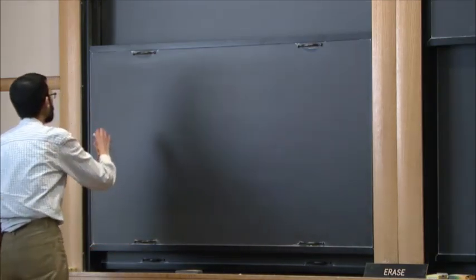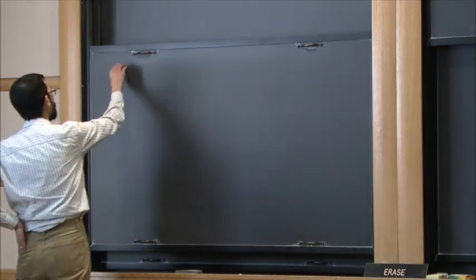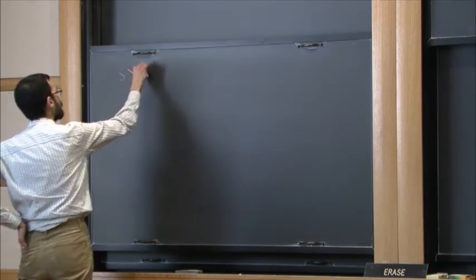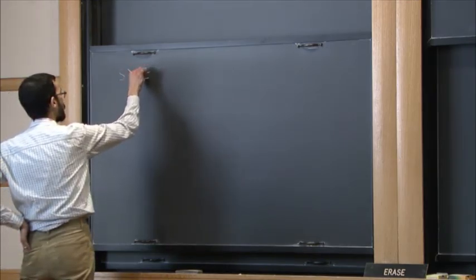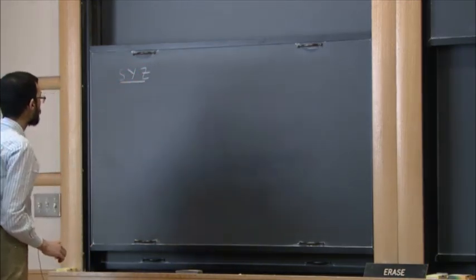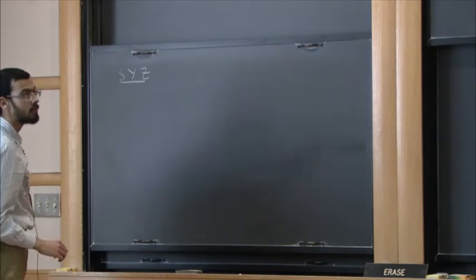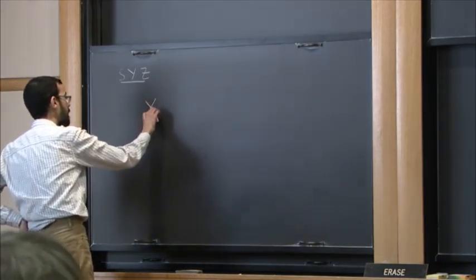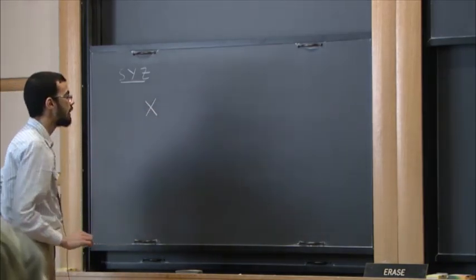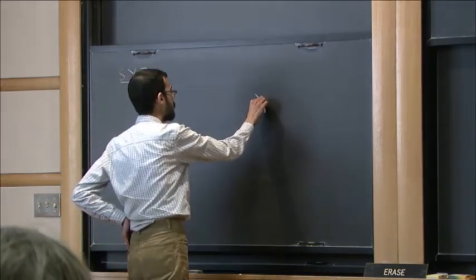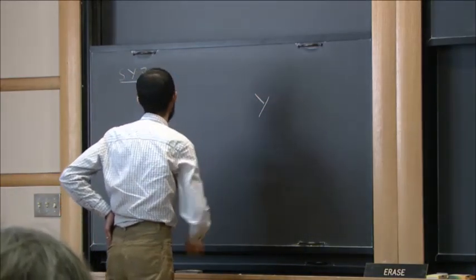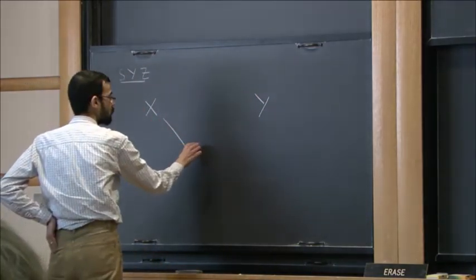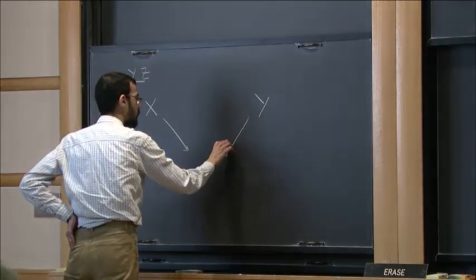There are two serious proposals for trying to understand mirror symmetry. One of them is Strominger-Yau-Zaslow (SYZ). They suggest that if you have a space X, then its mirror Y should be understood as a dual torus fibration.